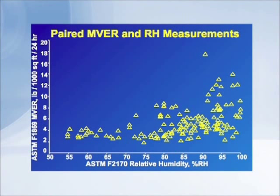On this next slide we'll take a look at the relationship between the calcium chloride kits and the internal relative humidity measured with probes in the concrete. I'm often asked the question: what is the relationship? Does three pounds measured at the surface of the concrete equal a certain percentage of humidity down in the concrete? This graph is based on about a hundred different paired measurements where calcium chloride kits were put on the surface of concrete and a humidity probe was drilled into the concrete right next to it.